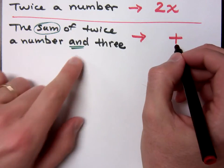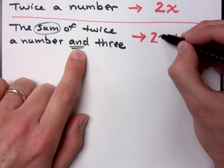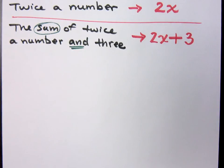So I'm going to put my sum right here. It's addition. What comes before the word and? Twice a number. That's 2x. What comes after the word and? 3. 2x plus 3.